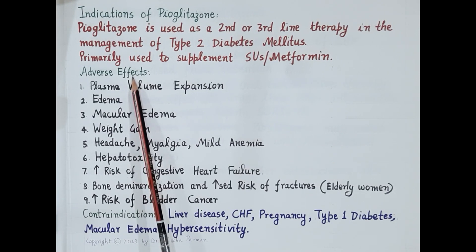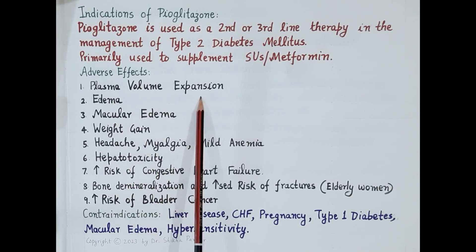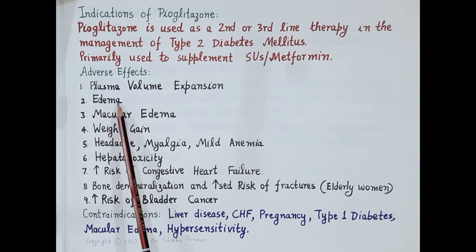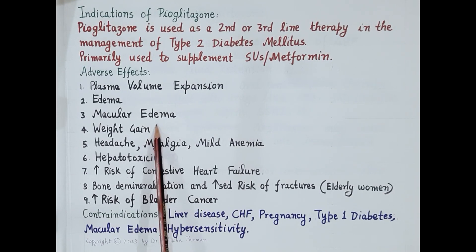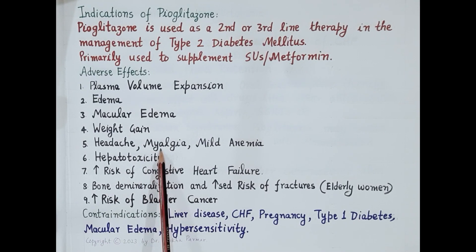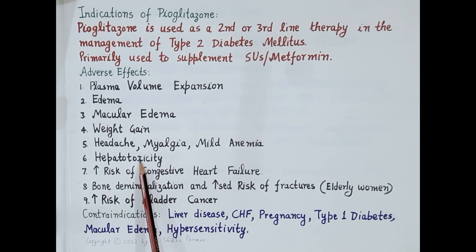Regarding adverse effects — importantly, pioglitazone increases sodium reabsorption in the collecting tubules of the kidney. Since sodium is reabsorbed, there is increased absorption of water, causing increased water retention and increased blood volume — this is plasma volume expansion. This increase in plasma volume due to water retention causes edema, or swelling. It can also cause macular edema, which is swelling in the part of the retina. Increased plasma volume and increased fat mass lead to weight gain. Pioglitazone can also cause headache, myalgia (muscle pain), and mild anemia. In some patients, it can cause hepatotoxicity, so monitoring of liver function is advised.